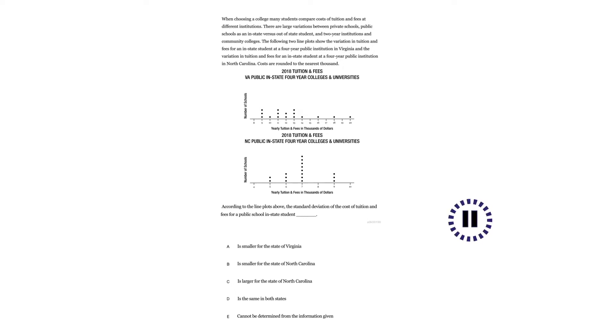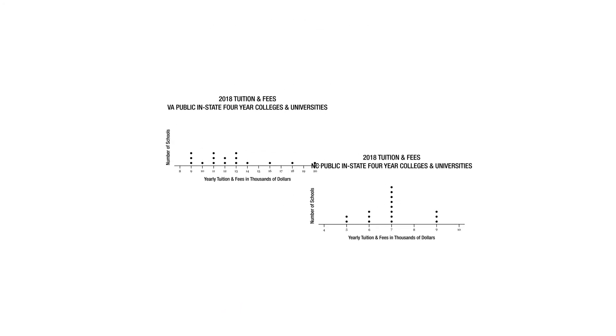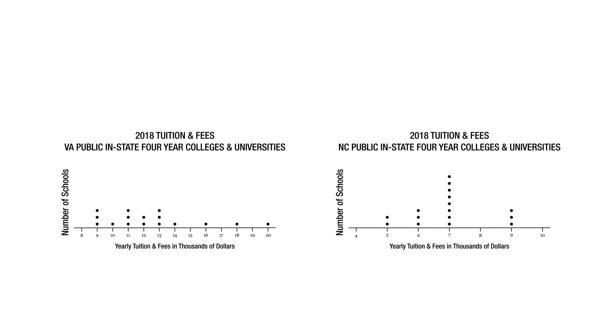Press pause and answer the question. So now we're looking at a different flavor of histogram, but it's pretty much the same thing. It just has dots, and it has a number of schools on the y-axis that fall into a given category, and it has yearly tuition and fees in thousands of dollars on the x-axis.